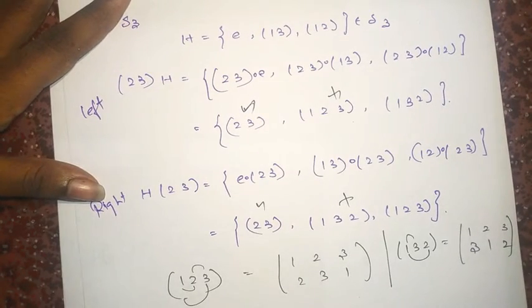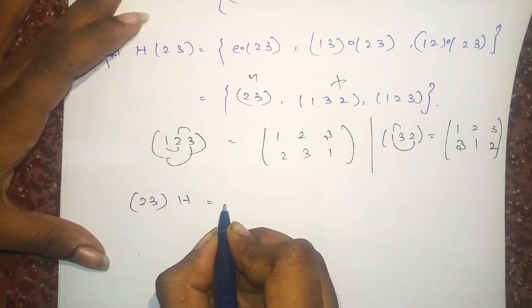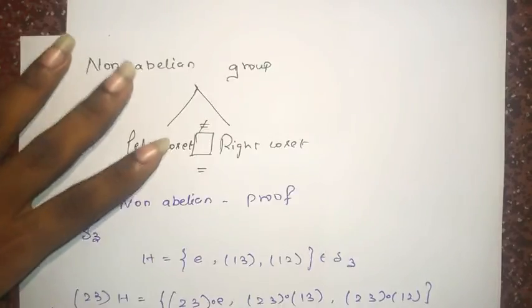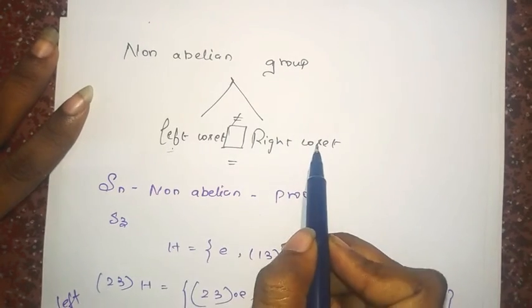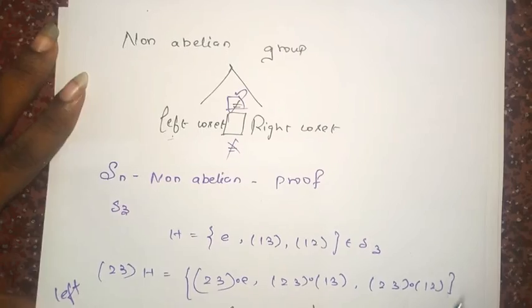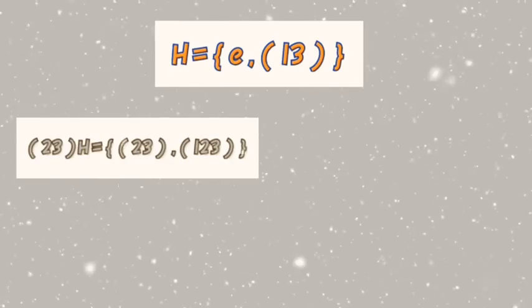The left coset (2,3) and H and right coset H(2,3) are not the same. And the relation between these two left coset and right coset is not equal to. It is not equal. (2,3) are not equal to (2,3).